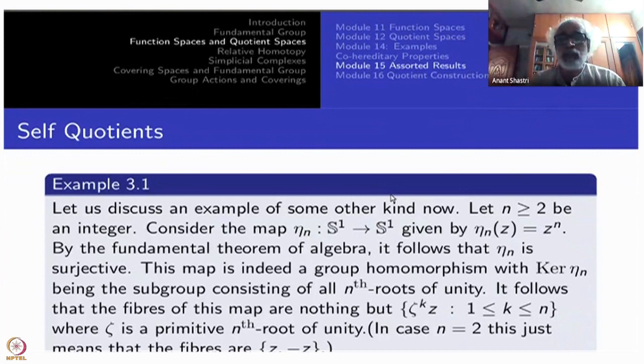So it follows that the fibers are nothing but nth roots of unity multiplied by some, translated by some Z. These will be all the fibers. When you take Z^k, where ζ is nth root of unity, Z times ζ raised to nth root of unity is also the same thing as z raised to nth root of unity. So all of them go to the same point z^n.